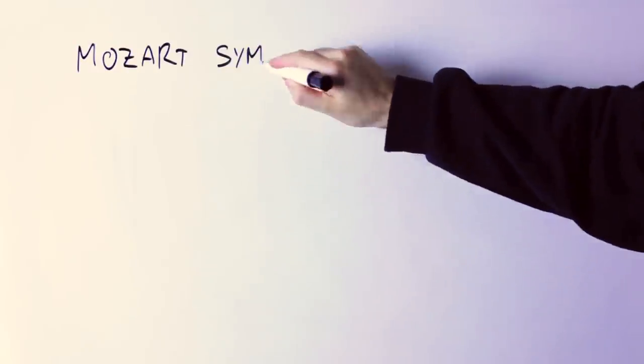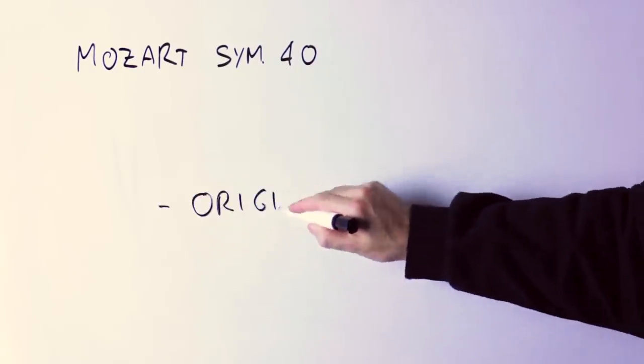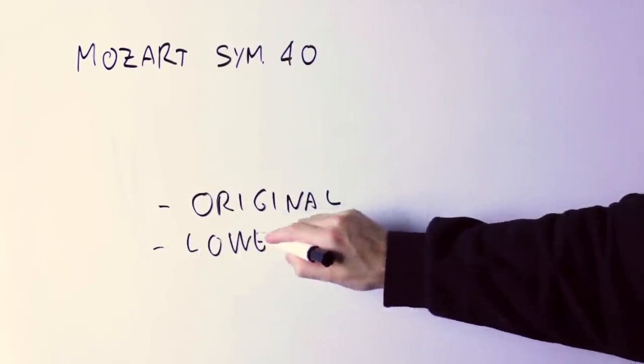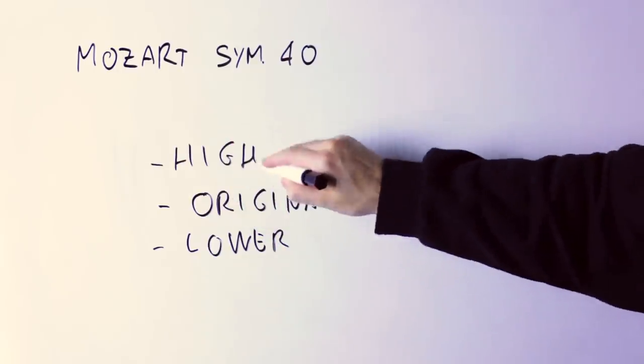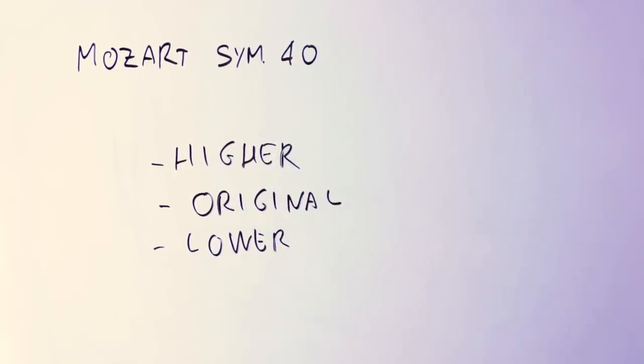The first example is the opening of Mozart's symphony number 40, you know this one. At the very start Mozart will play the same melody twice, but the second time it plays that melody the melody is somewhat lower. Let's hear it.